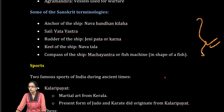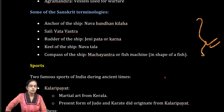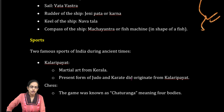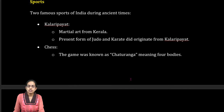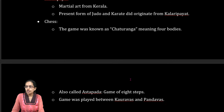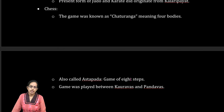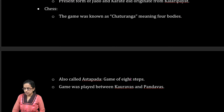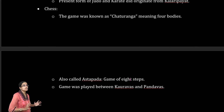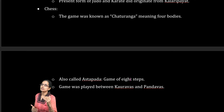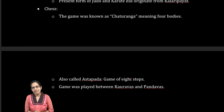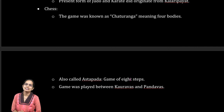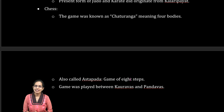Besides shipbuilding, sports were also important. Two major sports: one was a form of martial art similar to judo and karate, known as Kalaripayattu from the regions of Kerala. The next was chess, known as Chaturang, which had four important components and was also known as the game of eight steps or Ashtapad — the game played between the Kauravas and Pandavas. That was the development seen in the fields of science, technology, and navigation, a very important part of Indian art and culture.